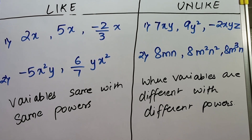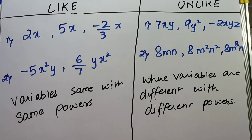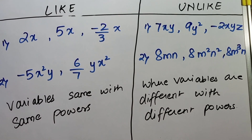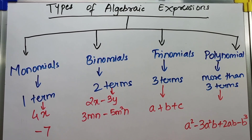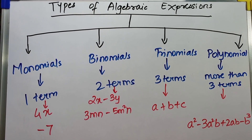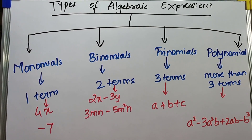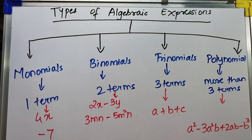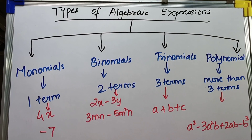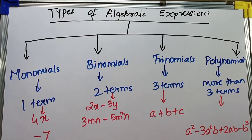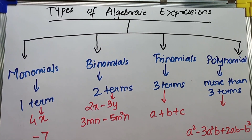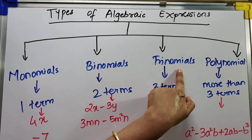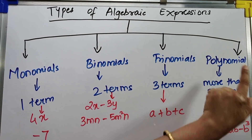I hope this concept of like and unlike terms is very clear. If you have any doubts or queries, you can ask us by putting your question in the comment box. The basic concept of what are algebraic expressions and what are terms should now be clear to you all. Now we will see the types of algebraic expressions. There are four types: monomials, binomials, trinomials, and polynomials.